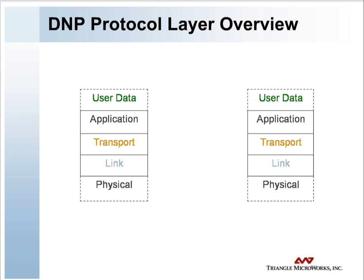However, DNP-3 enhances the EPA by adding a transport function that allows for message segmentation. Each layer in the stack communicates with the same layer in another device, relying on lower layers to provide more primitive functions.